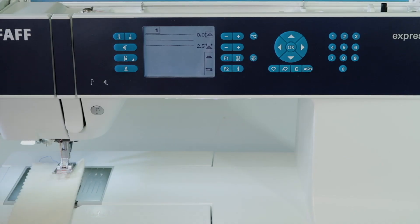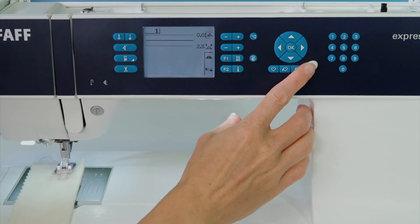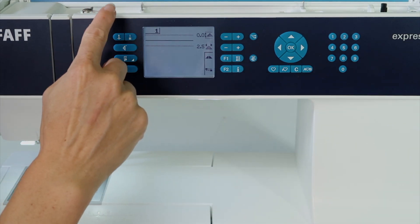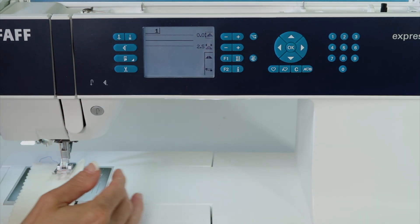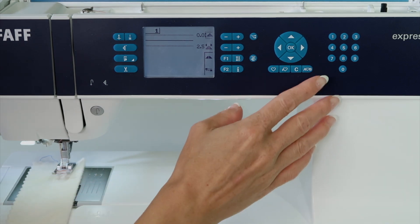The PFAFF Expression 3.5 sewing machine has a fabulous way to combine different decorative stitches together and also the lettering that is built into this machine. It's called sequencing.